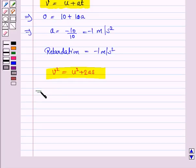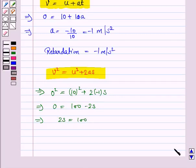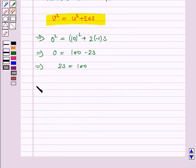We obtain 0² equals 10² plus 2 times minus 1 times s. So we have 0 equals 100 minus 2s. This implies 2s equals 100, and this implies s equals 50.